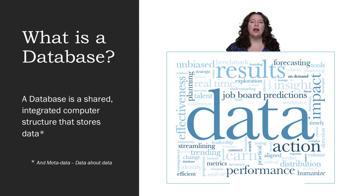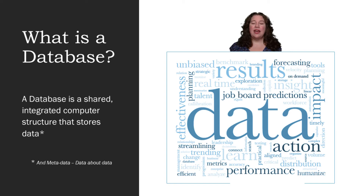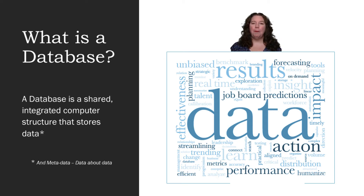There's also the concept of metadata, which is data about data — information about your data. So you can have a data value like five thousand stored in a field called 'price.' By having it in a field called price, you now know more about that data. It might be in a table called inventory of items, and that gives you even more information. Your metadata is your information about your data.